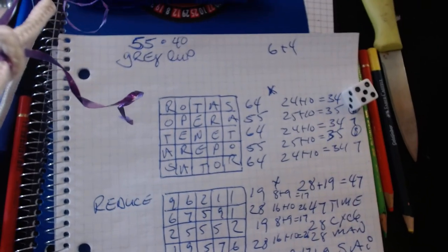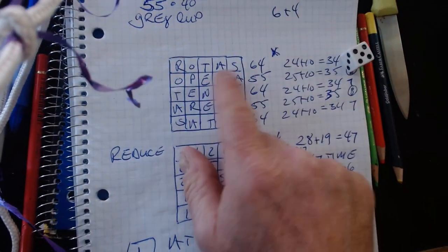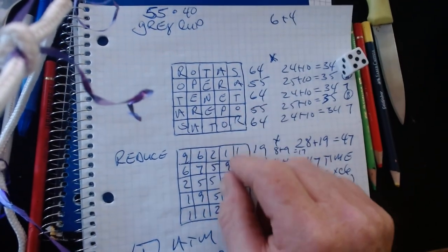When you come down into Rotas, Sator, the numeric values equals 64, 55, 64, 55.